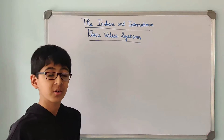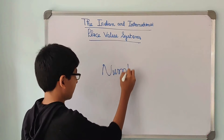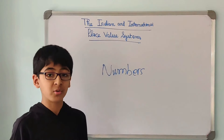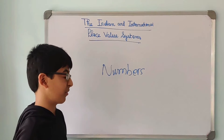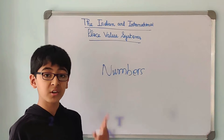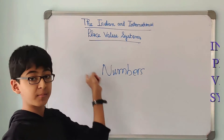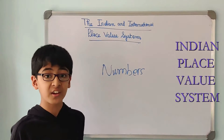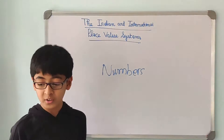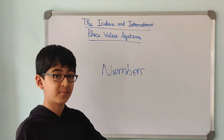Today, we are going to learn about numbers. When we talk about numbers, we need to know something about number names. When we talk about number names, we can write number names in two different systems — one is the Indian place value system and the other is the International place value system. Today we are going to learn these two. So, here we go.